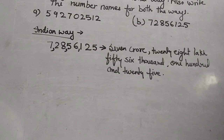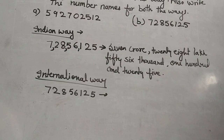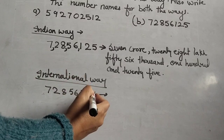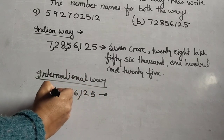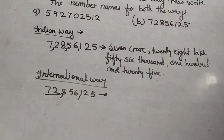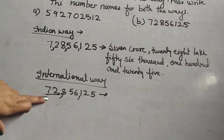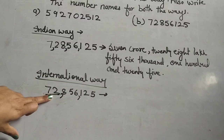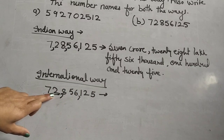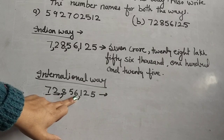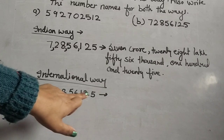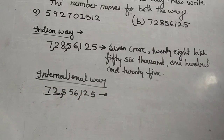Now the same number in the international way. Commas are placed before every three digits: ones, tens, hundreds, thousands, ten thousands, hundred thousands, millions. In the millions period there are only two digits, so we read it as: seventy-two million, eight hundred fifty-six thousand, one hundred and twenty-five.